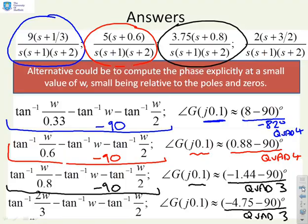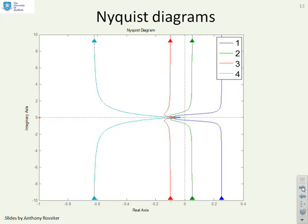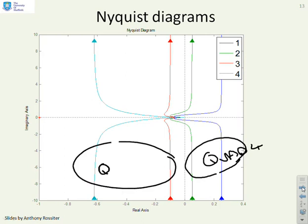Now if we plot the Nyquist plots for these four examples, you'll see as expected the first two begin in quadrant 4, and the second two begin in quadrant 3. So what we've shown is a very simple calculation allows you to decide: do I start the plot over here or do I start the plot over here?